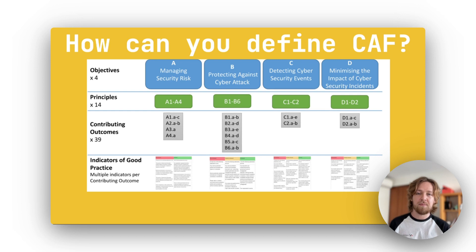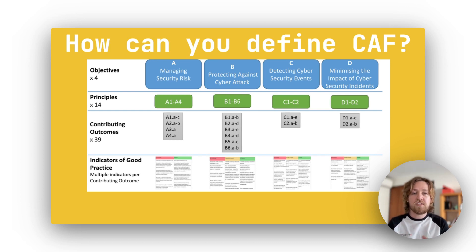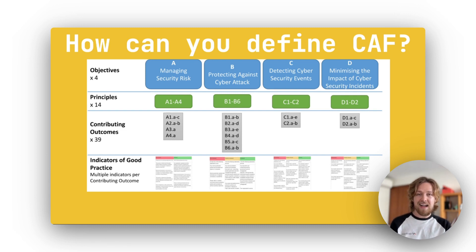Each principle can be broken down again into a contributing outcome, and each outcome is associated with an indicator of good practice, or IGP. These IGPs can gauge how well you align with each principle. They don't just tell you what to do — for instance, it won't just say have MFA, but it will give you an example of how good MFA is implemented. Each IGP can either be fully, partially, or not achieved.